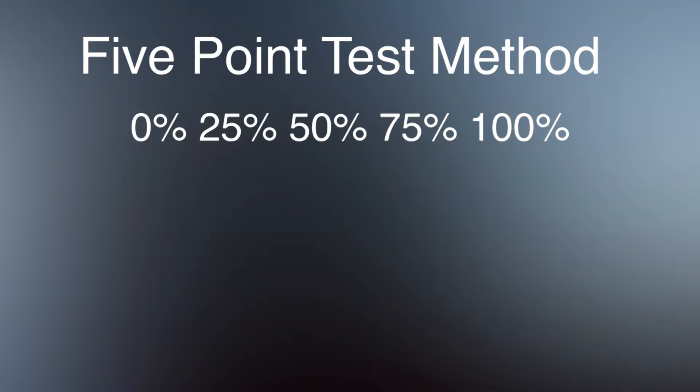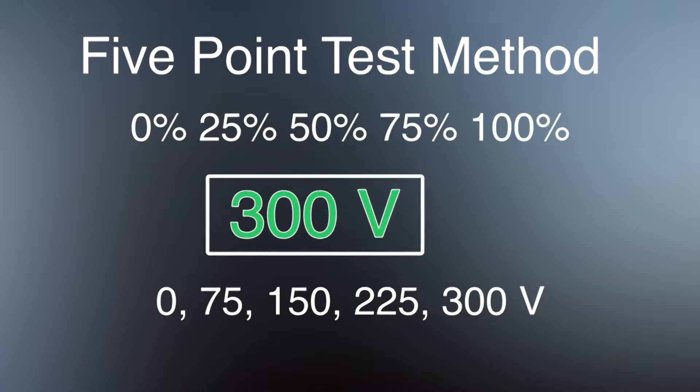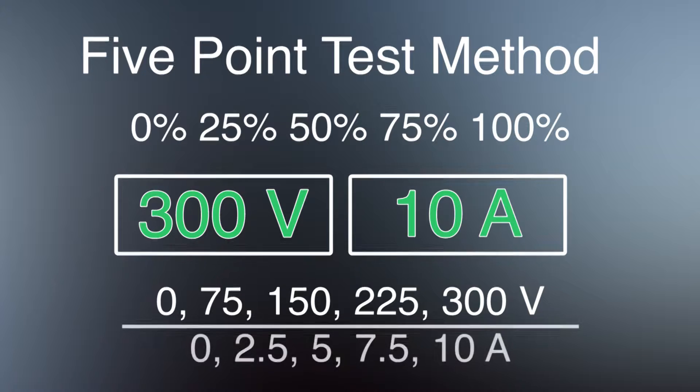The five point test method uses percentages of 0, 25, 50, 75, and 100%. For the 300 volt range we are testing here this corresponds to 0, 75, 150, 225, and 300 volts. Using the level ratio key allows for selecting of a percentage to conduct a point of the five point test. Similarly this test will be conducted on current as well. For this range of 10 amps, this leads to 0, 2.5, 5, 7.5, and 10 amps.